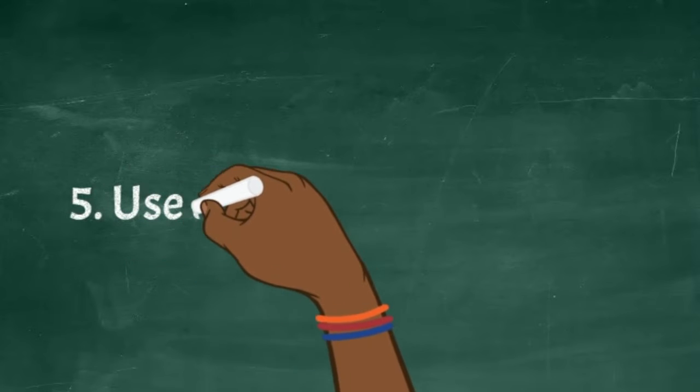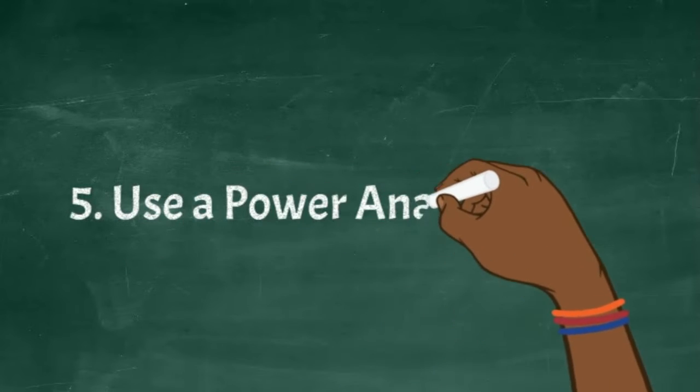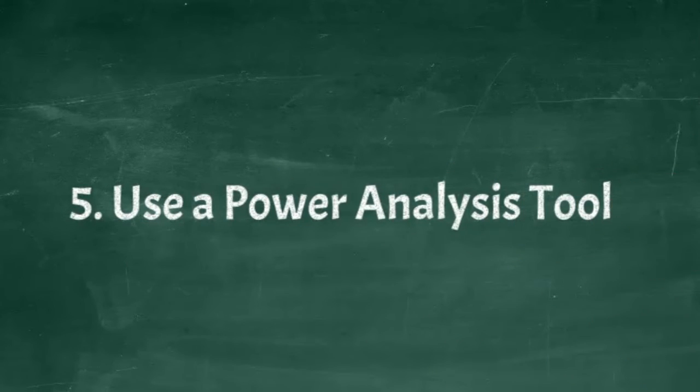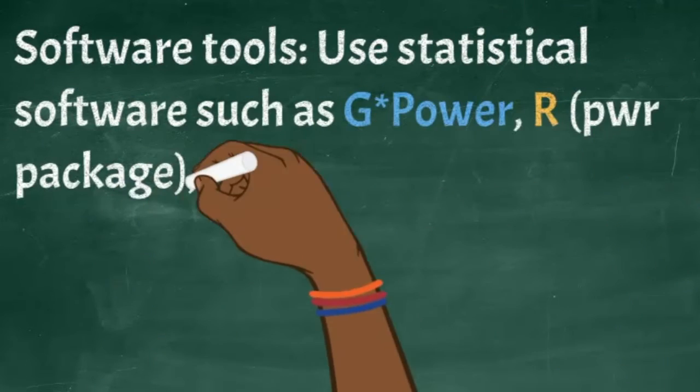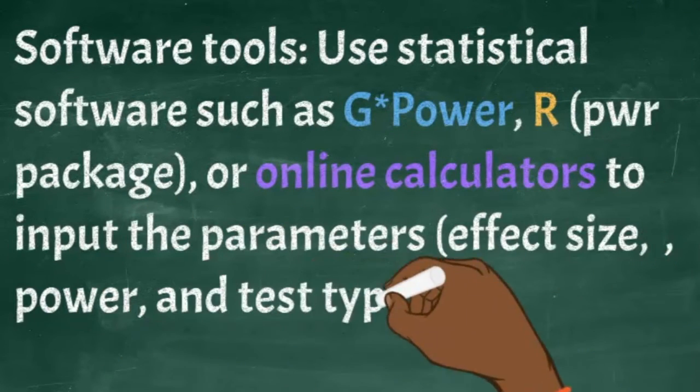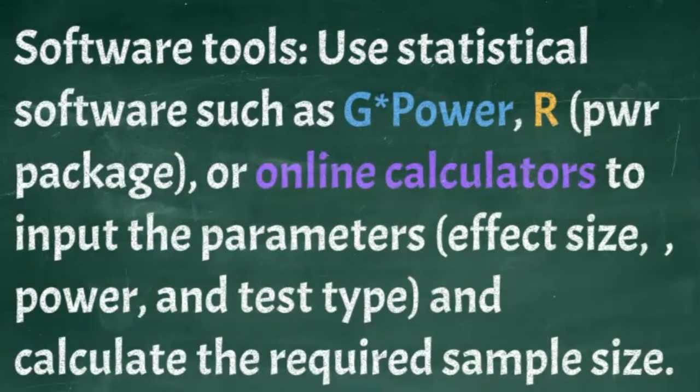The fifth step is to use a power analysis tool. So the software tools that allow you to do power analysis include statistical software, such as G-Power, R, or online calculators to input the parameters, such as the effect size, the alpha, the power, and test type, and calculate the required sample size.